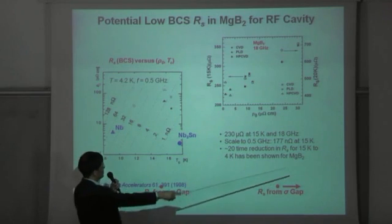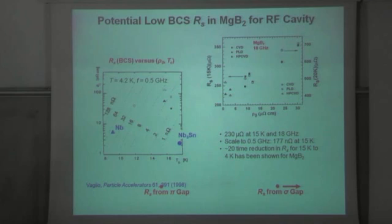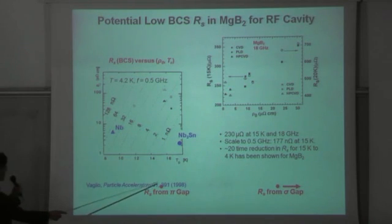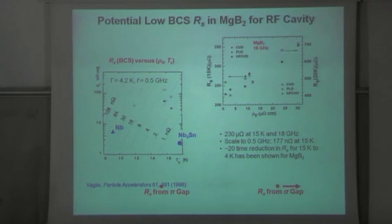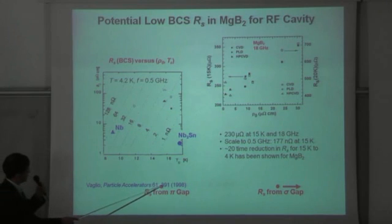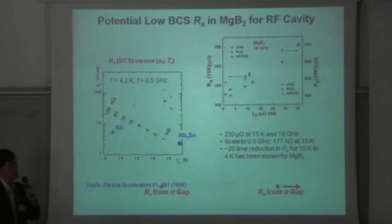And further, because of the low residual resistivity, and the lowest value that we have demonstrated in our films is 0.1 micro-ohm centimeter. And that would place magnesium diboride right here using the value of the pi gap, that is 2 meV. So even though the smaller gap actually is smaller than that of the niobium-3-tin, but the low residual resistivity could lead to very, very low surface resistance.